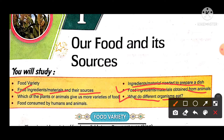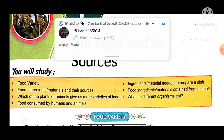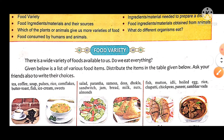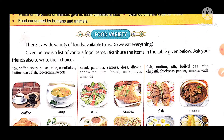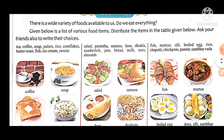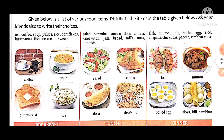Our first topic is food variety. There is a wide variety of food available to us. What do we eat every day? We have many varieties of food available. There is a list of variety food items — distribute the items in the table given below and ask your friends to write their choices. Let us discuss which variety they like.